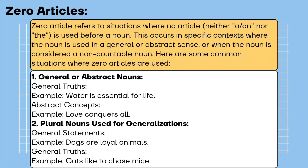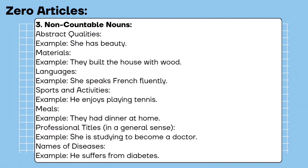Plural nouns used for generalizations — general statements. Example: dogs are loyal animals. General truths. Example: cats like to chase mice. Non-countable nouns — abstract qualities. Example: she has beauty. Materials. Example: they built the house with wood. Languages. Example: she speaks French fluently. Sports and activities. Example: he enjoys playing tennis. Meals. Example: they had dinner at home.